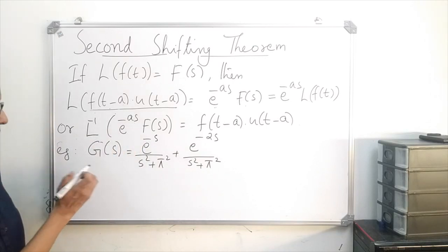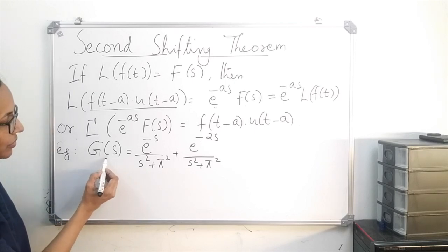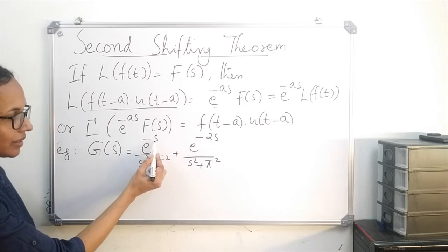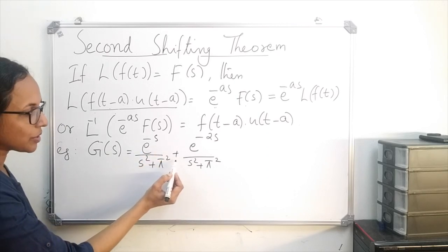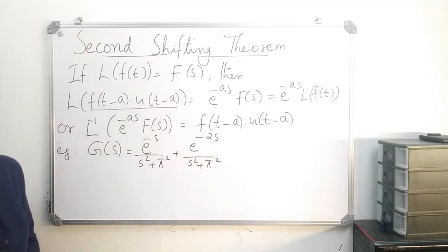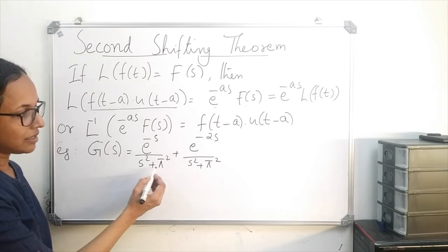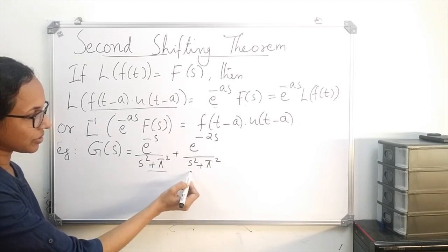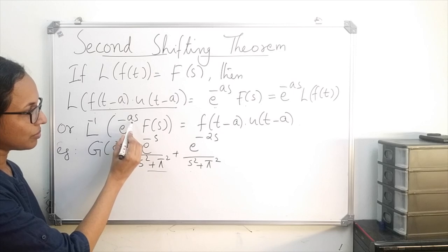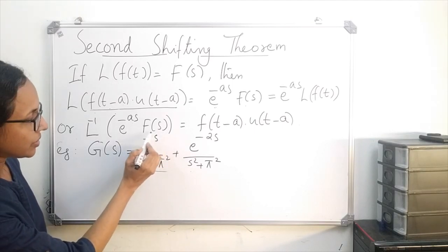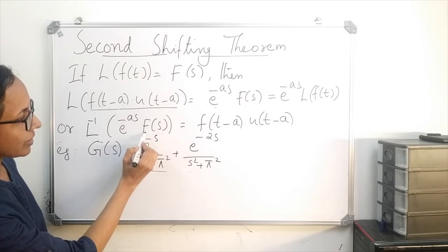Consider one example. Suppose we have to find the inverse Laplace transform of g of s equal to e raised to minus s divided by s squared plus pi squared, plus e raised to minus 2s divided by s squared plus pi squared. Observe the terms of this function — both the first and second terms are of the form e raised to minus as times f of s. So what we have to do is find the inverse Laplace of f of s first.